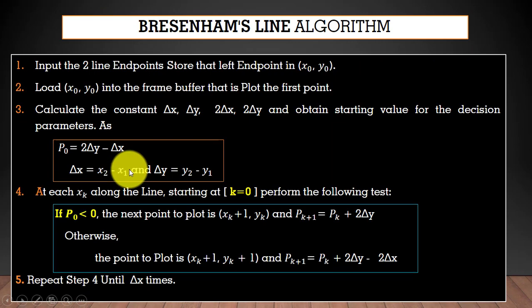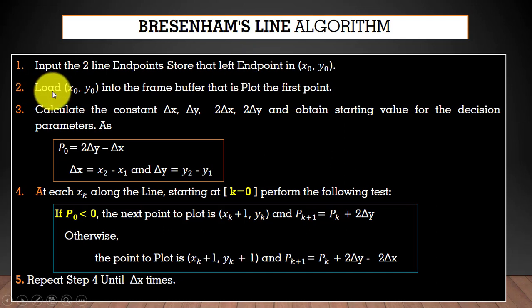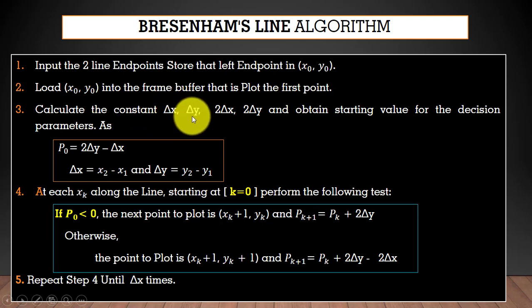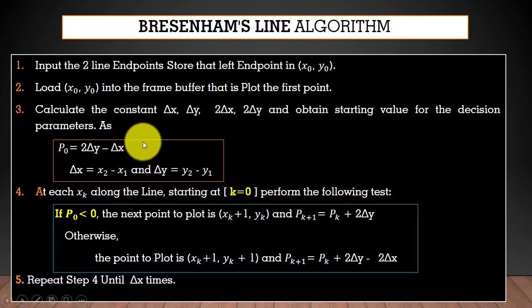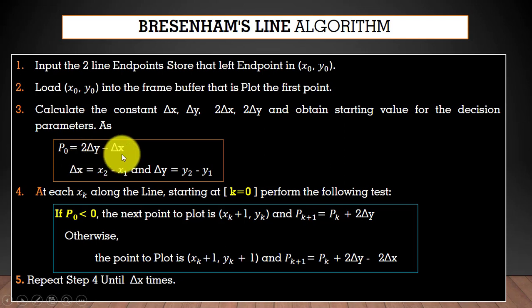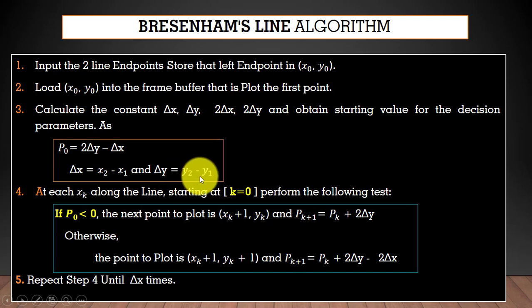This is the Bresenham line drawing algorithm. First, we input the two endpoints for the line. After that, we load the initial point into the frame — that is, we plot the first point. Then we calculate the values for Δx, Δy, 2Δx, 2Δy, and the slope m. You can calculate Δx using x₂ minus x₁, and Δy using y₂ minus y₁.